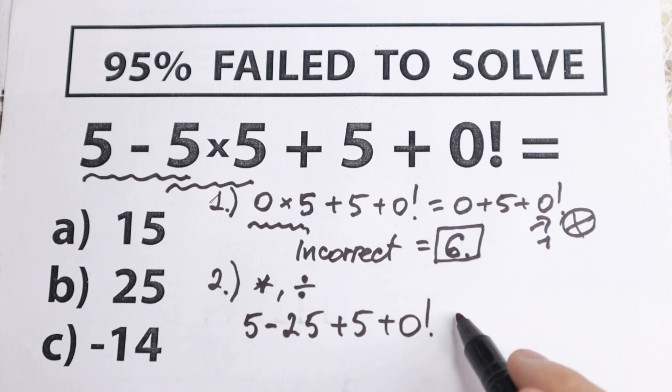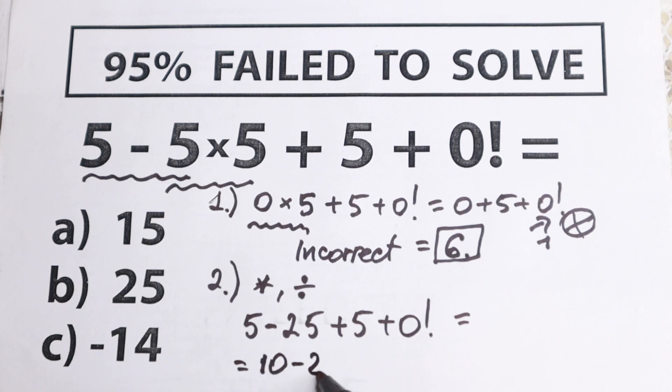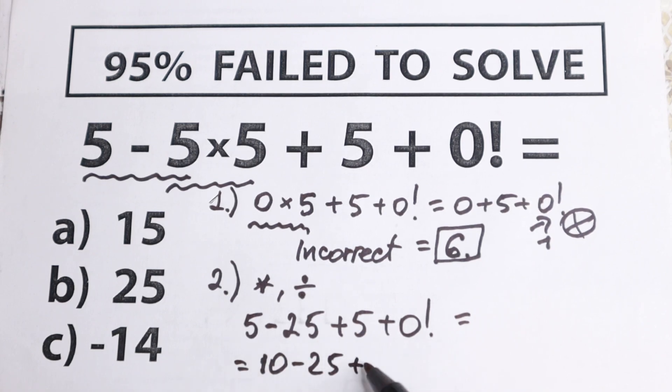Let's go next: 5 + 5 = 10. So we can write 10 - 25 + 0!. Later I'll change this 0 factorial because 0 factorial equals 1.